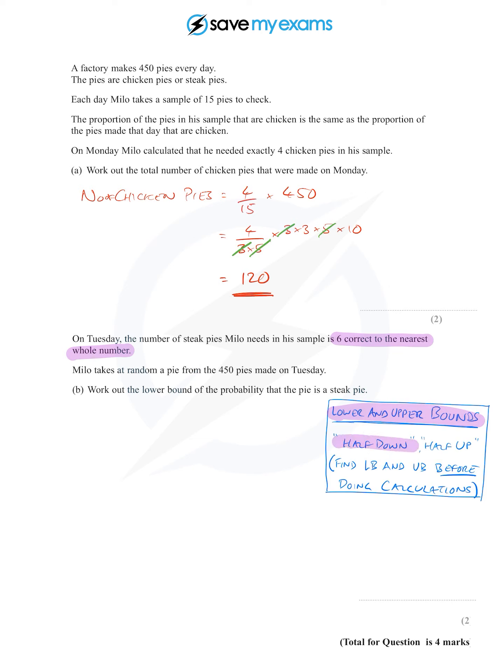My rules for upper and lower bounds are half down, half up. The number of steak pies in the sample is 6, but we need a lower bound. A half down would be 5.5.